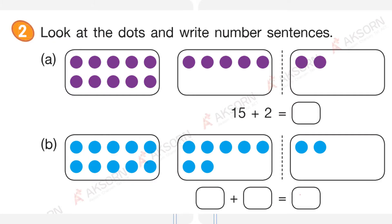Number two: look at the dots and write number sentences. We have 1, 2, 3, 4, 5, 6, 7, 8, 9, 10 and 1, 2, 3, 4, 5. So it is 15 plus 2. How many? 17. Good job!